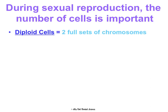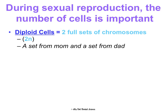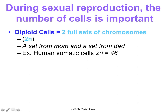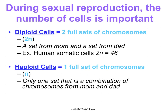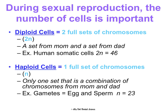Diploid cells have two full sets of chromosomes, abbreviated as 2N. You have a set from mom and a set from dad. All human somatic cells are diploid, and that diploid number for humans is 46. Haploid cells only have one set of chromosomes, represented as N. There's only one set, and it's a combination of chromosomes from mom and dad. These are your gametes — your egg or sperm — and in humans, N equals 23.